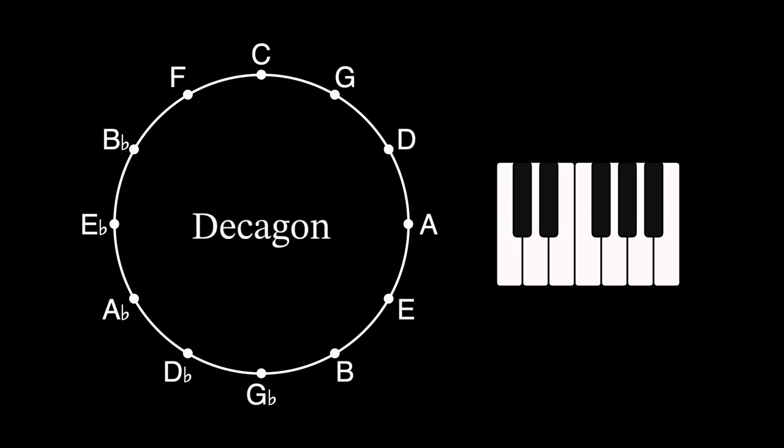The decagon plays the chromatic scale at the same speed as the pentagon, except that it plays two chromatic scales simultaneously, a tritone apart.